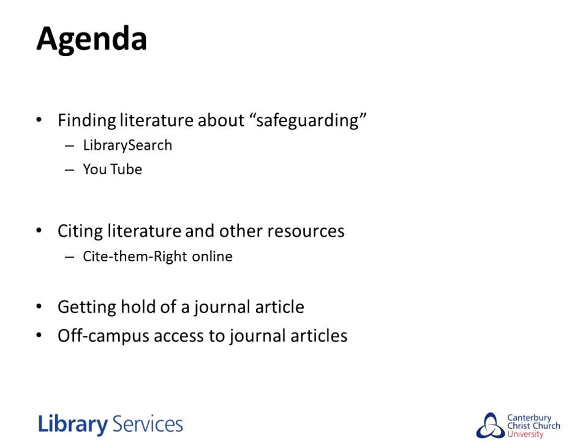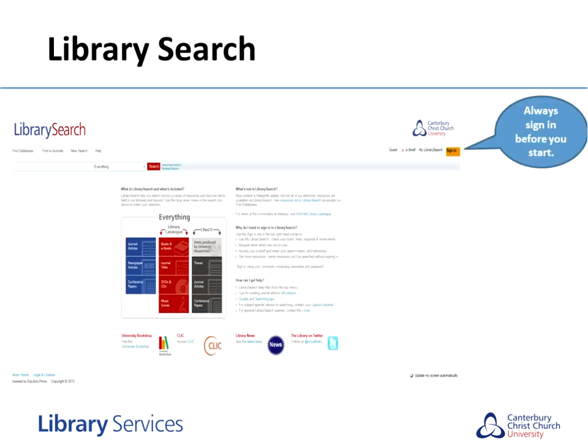If you want to use a YouTube video, I'll show you a strategy for how to choose a good one. We'll also talk about citing literature, and I'd like to introduce you to a library resource - the online version of Cite Them Right. There's a book called Cite Them Right, but there's also an online version. I'll also remind you about getting hold of a journal article and how to access articles off-campus, since you might do this activity from home.